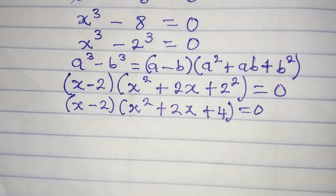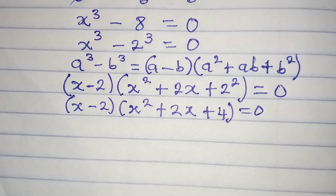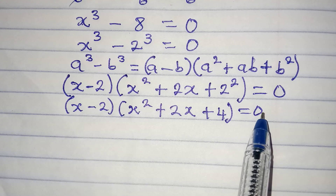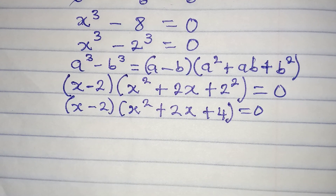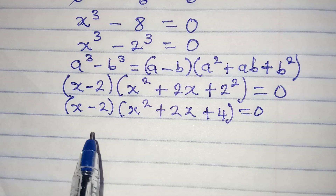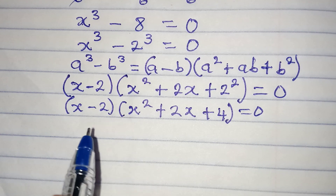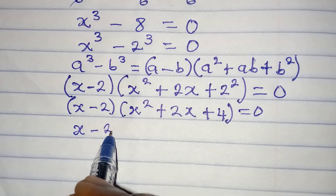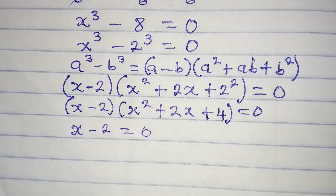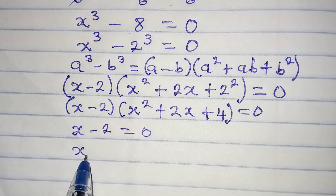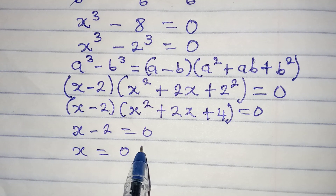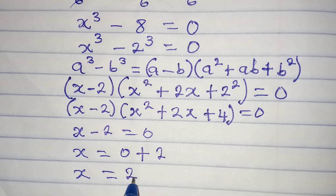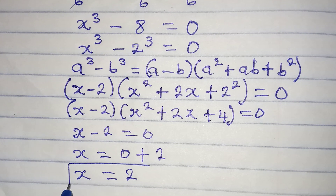The next thing to be done is to apply the zero product rule. Since we have these two factors multiplying to give 0, either of them or both must equal 0. If we pick x minus 2 equals 0, then x equals 0 plus 2, so x equals 2. That gives us the first value of x.